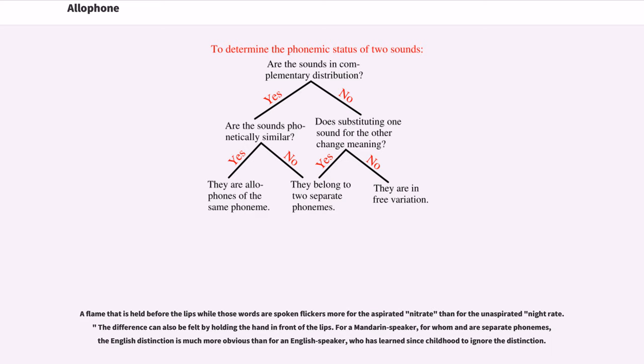A flame that is held before the lips while those words are spoken flickers more for the aspirated nitrate than for the unaspirated nitrate. The difference can also be felt by holding the hand in front of the lips.